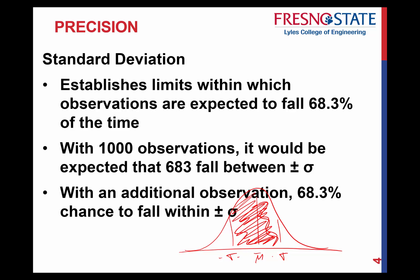That leaves about 317 observations falling outside that area. Another way to read it: with any additional observation you make, there's a 68.3% chance it will fall within that range. For our purposes, we want the smallest standard deviation possible, which tells us we're much more precise — and we want that precision to be about the mean, the most probable value.